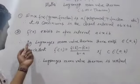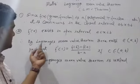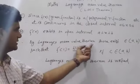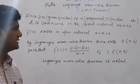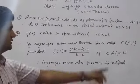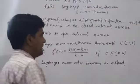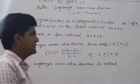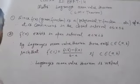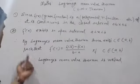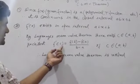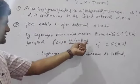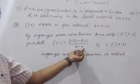Therefore, by the Lagrange Mean Value Theorem, there exists a point c belonging to (a, b) such that f'(c) = [f(b) − f(a)] / (b − a).